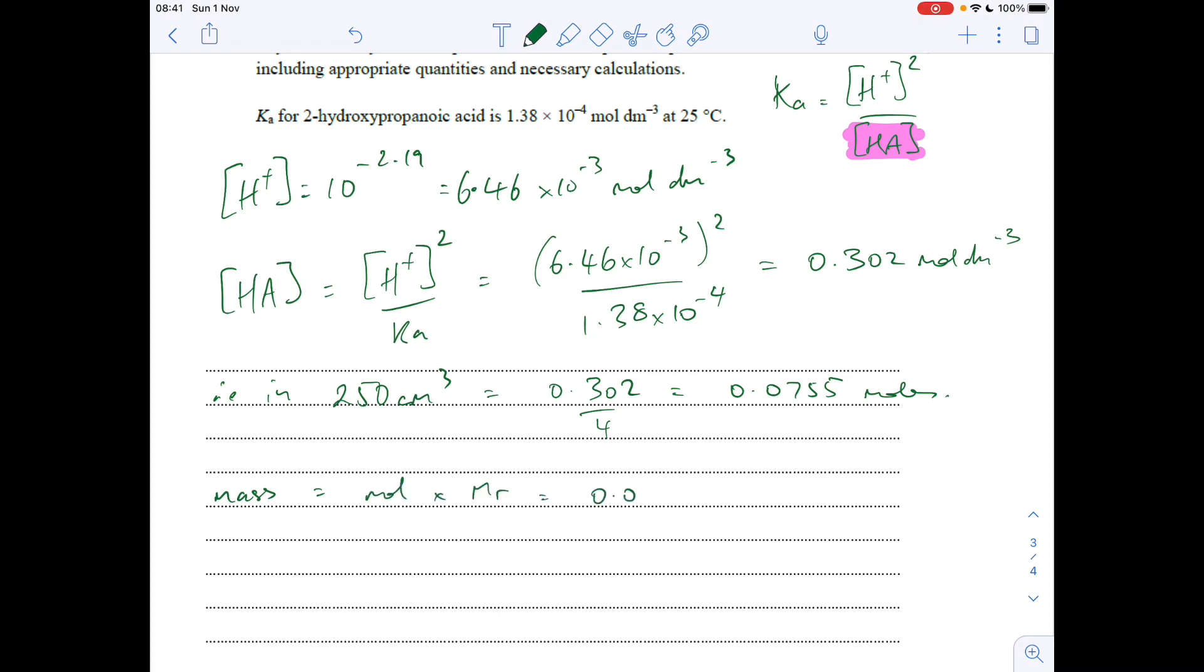The mass is moles times Mr, so 0.0755 times 90, and that comes out at 6.80 grams. That's to two decimal places. We use a two decimal place balance in our college, so I would suggest to my students to go for that number of decimal places.